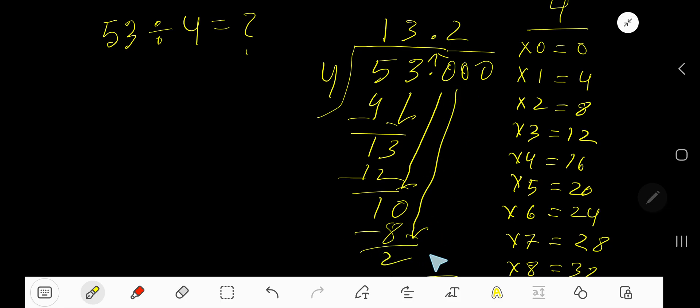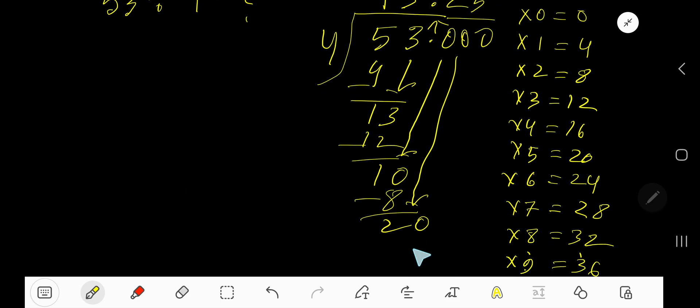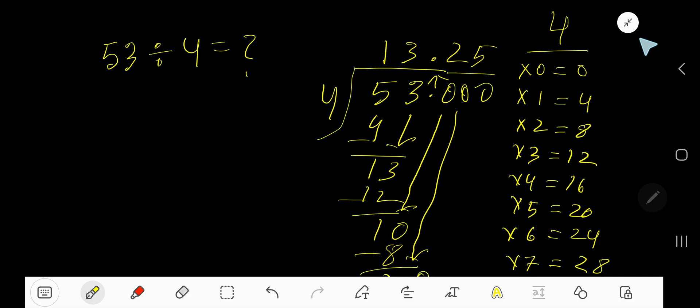Bring down another zero to get 20. 4 goes into 20 how many times? 5 times. Write 5. 5 times 4 is 20. Subtract 0. So our answer is 13.25.